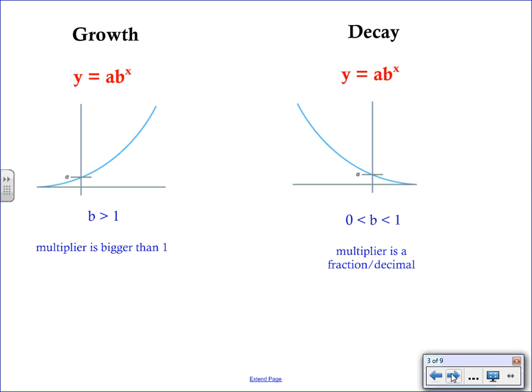I wanted to review the graphs just one more time. We are looking at growth and decay and again if your multiplier is larger than one, so for example doubling would be a multiplier of two, tripling would be a multiplier of three, you are going to see growth and decay has to be a fraction or a decimal. So half-life your multiplier would be a half so clearly you would see decay.